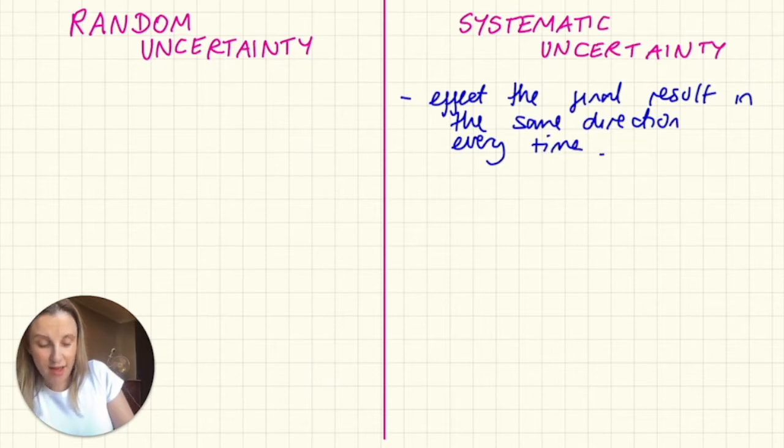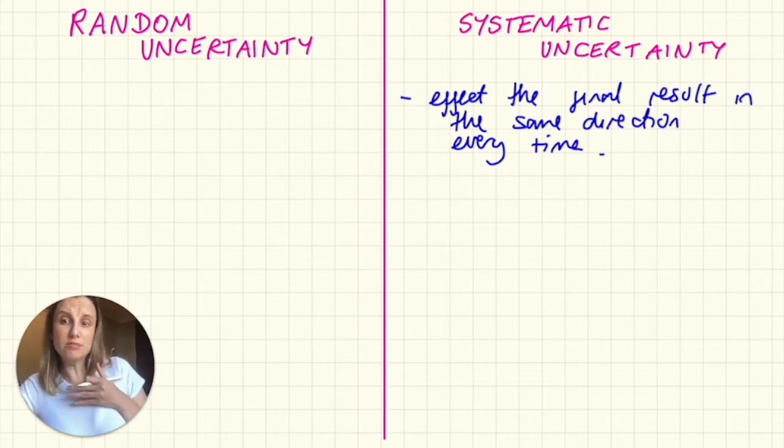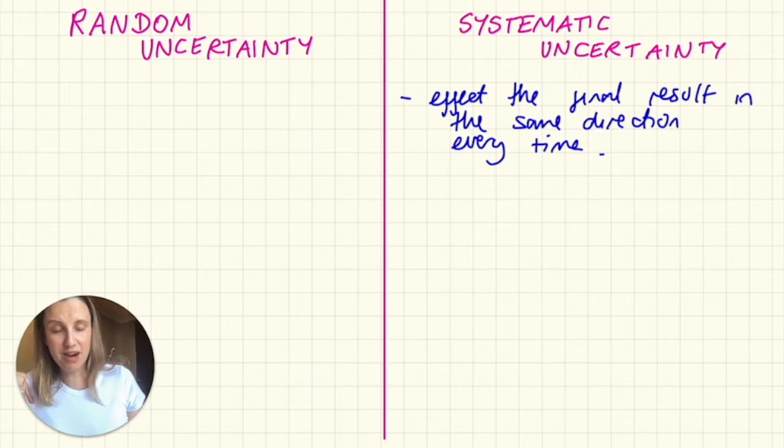So what I mean by that is this uncertainty is uncertain because every time I do the experiment it's going to read lower than it should. It doesn't read sometimes higher, sometimes lower, it's always shifting it in the same direction normally by an indeterminate amount.